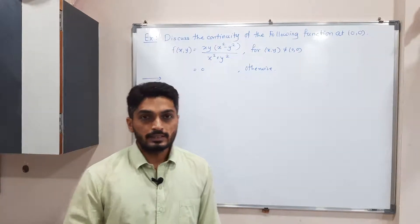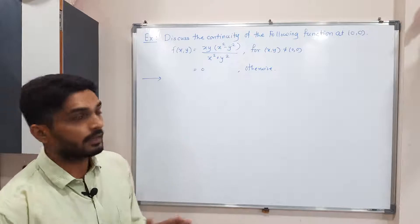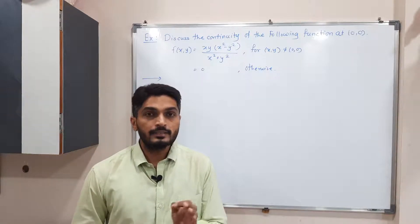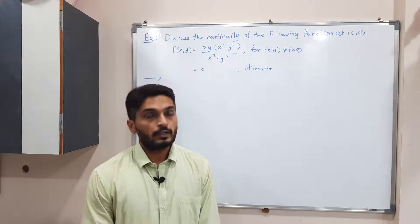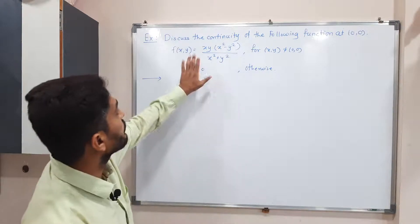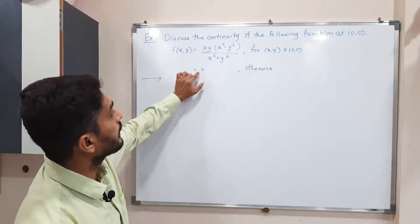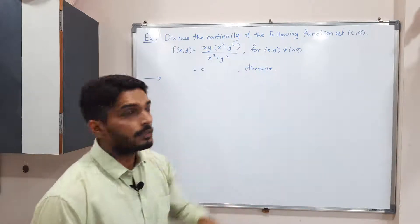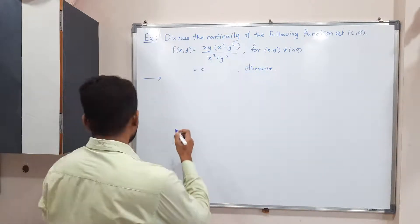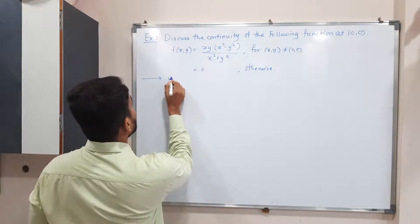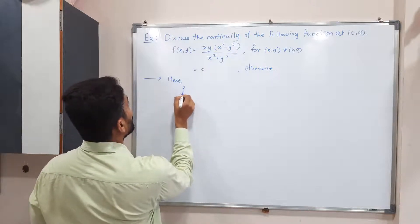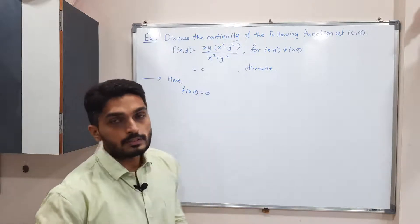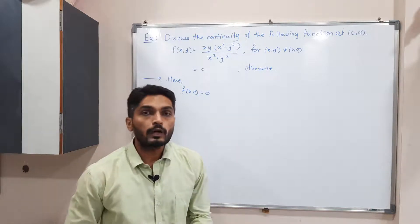In this example, we have a function and we have to discuss whether the function is continuous at (0, 0) or not. This is the definition of F, and it is 0 otherwise — meaning when (x, y) = (0, 0), we have F(x, y) = 0. So clearly F(0, 0) = 0.